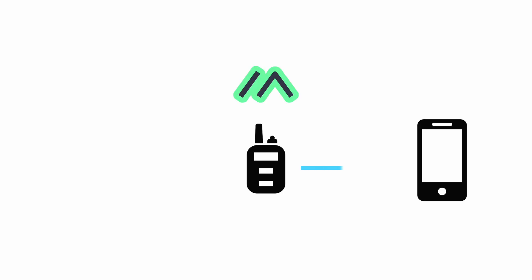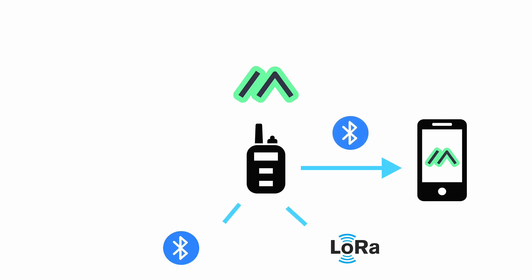So how does it work? You need a radio device called a Node running the Meshtastic firmware, which should be paired to your phone over Bluetooth. Your phone runs the Meshtastic app for sending and receiving messages. The radio device has Bluetooth and LoRa communication. LoRa stands for Long Range, which handles the communication with other Meshtastic devices.